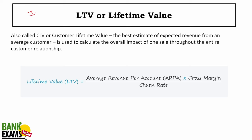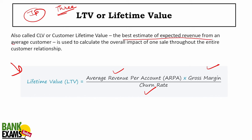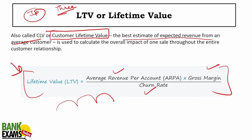Lifetime value (LTV) is a very important topic — last year three questions were asked from it. The formula is: average revenue per account multiplied by gross margin divided by churn rate. LTV is the best estimate of expected revenue from an average customer. Customers who keep purchasing are retained; those you cannot retain have churned. An in-depth video is already available on our YouTube channel.